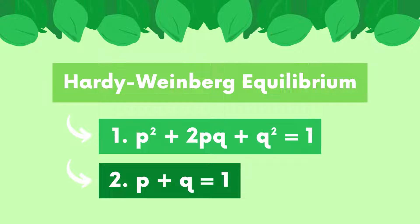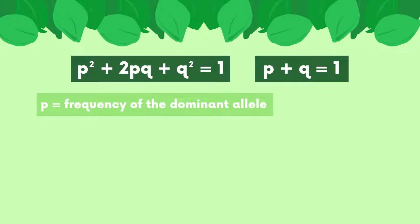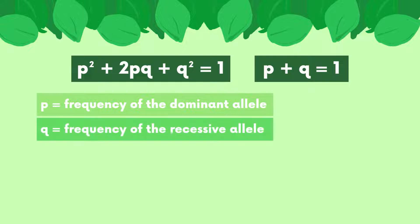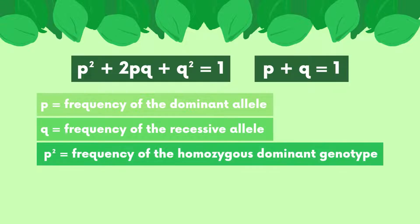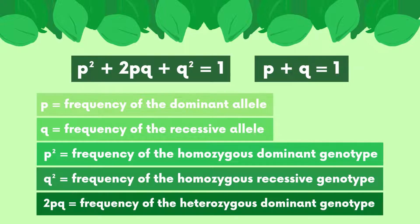Before we take a deeper look at the equations as a whole, let's first talk about each variable individually. In the equations, p represents the frequency of the dominant allele and q represents the frequency of the recessive allele. p² represents the frequency of the homozygous dominant genotype, q² represents the frequency of the homozygous recessive genotype, and 2pq represents the frequency of the heterozygous dominant genotype.